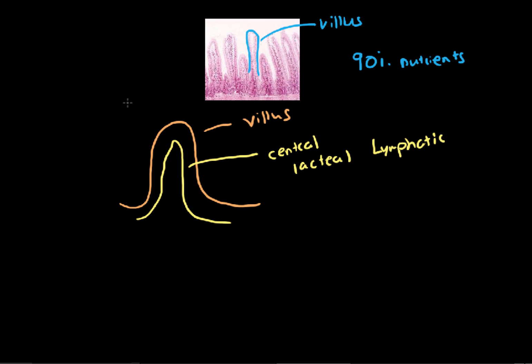And inside of our lumen, like we said earlier, there's going to be a ton of little fat molecules that are going to be broken down and emulsified. So these are fats. And they're going to enter inside the central lacteal and then be pumped into circulation.